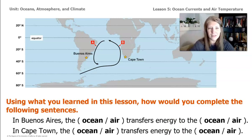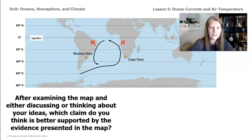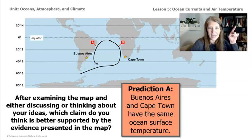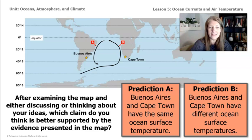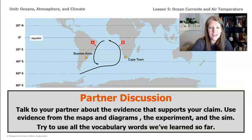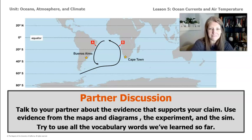Now that we know energy is transferred from current A to the air at Buenos Aires, and from the air to the current at Cape Town, let's look one more time at our two predictions: prediction A said these cities are at similar latitudes getting the same energy from the sun, so the ocean surface temperatures should be the same; prediction B said no — the currents moving past these two locations are going to be different. Discuss with a partner which claim is best supported by all the evidence we've collected today, and be ready to share your ideas with your classmates and teacher. See you in part four of lesson five!